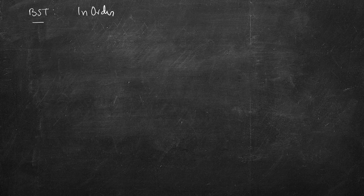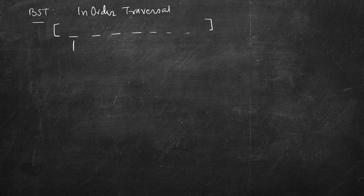Since this is a binary search tree, if we do an in-order traversal we will get the numbers in sorted order. Once we have a sorted array, we can use two pointers — one on the left and one on the right.